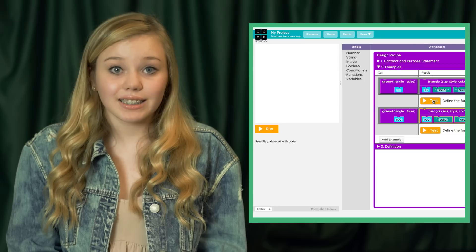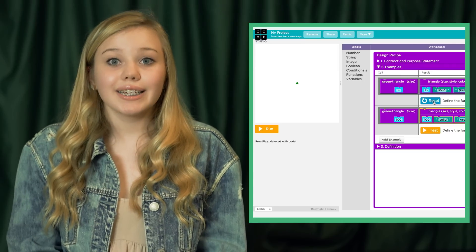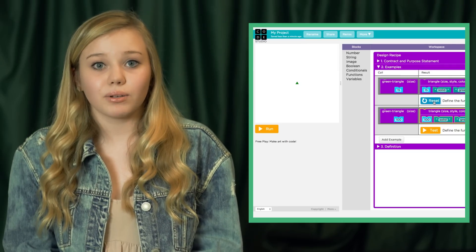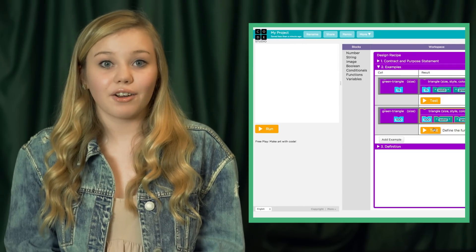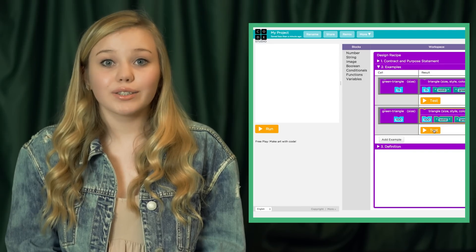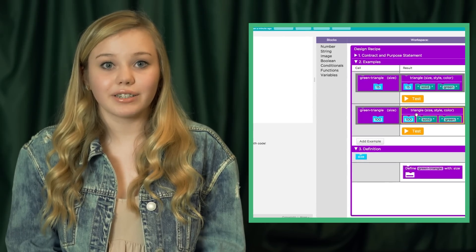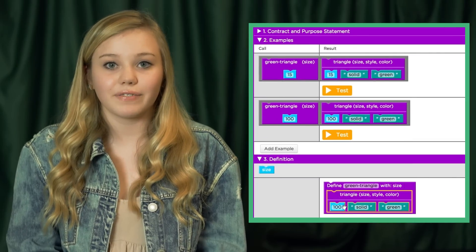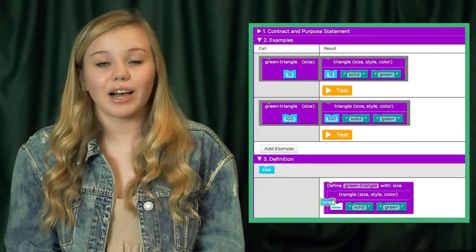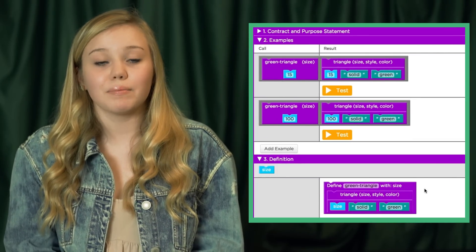Each example has a test button next to it. Clicking test will run the code in your example and display its output in the play area on the left. Running a test will also compare the value returned by your test against the value returned by your function definition given the same values and tell you whether or not your example matches your definition.